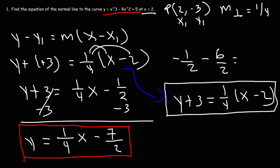That's how you find the equation of a normal line when given a curve and either the x value or the full point. For practice, let's work on another example.